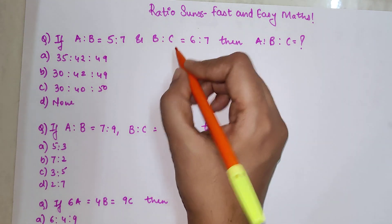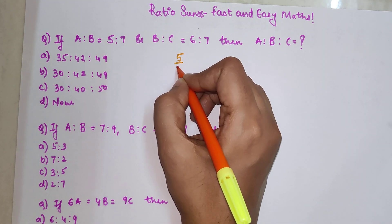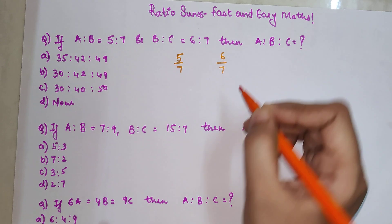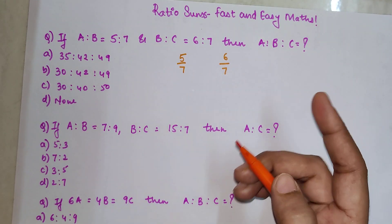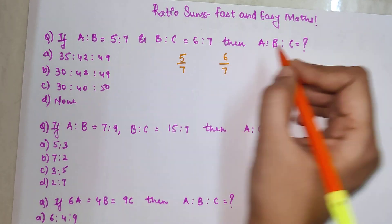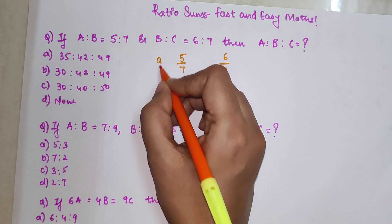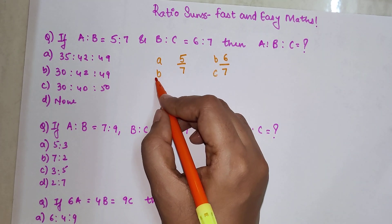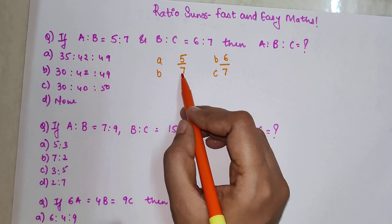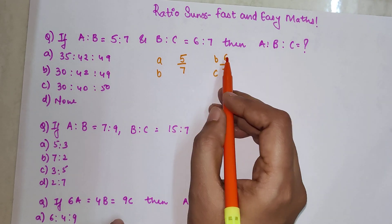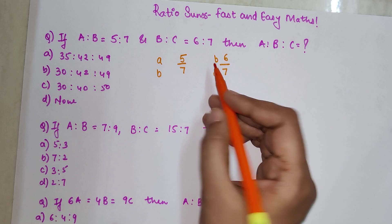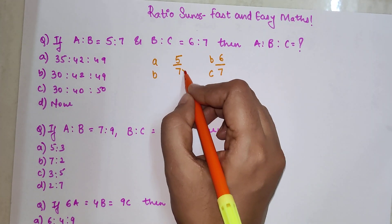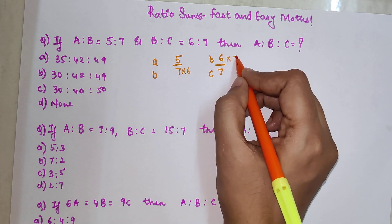Whenever you have something like this, it's very simple. Write down the ratios — this is your A, this is your B, this is your B again, and this is your C. You need to make the B values the same. Here 7 is a prime number and 6 does not come in 7's table, so the LCM of 6 and 7 will be found by just multiplying them with each other.